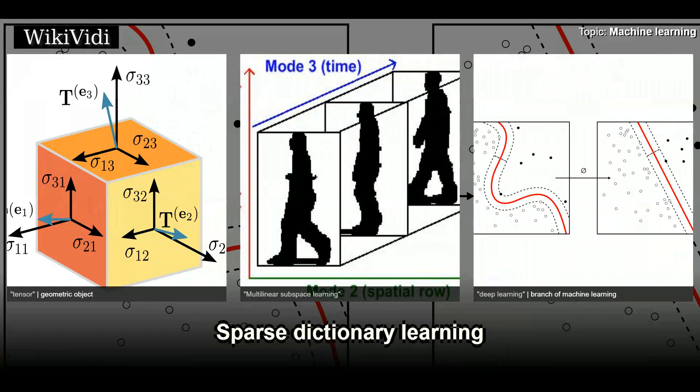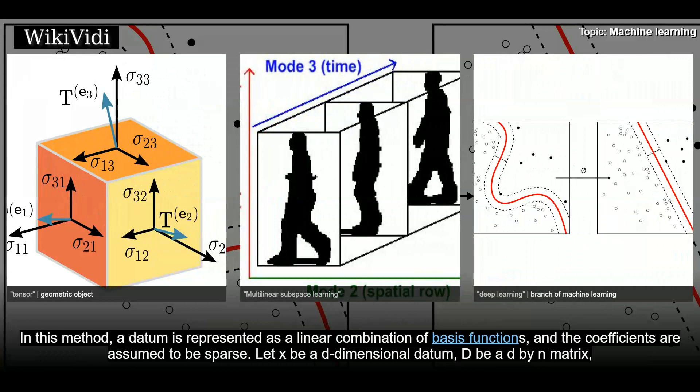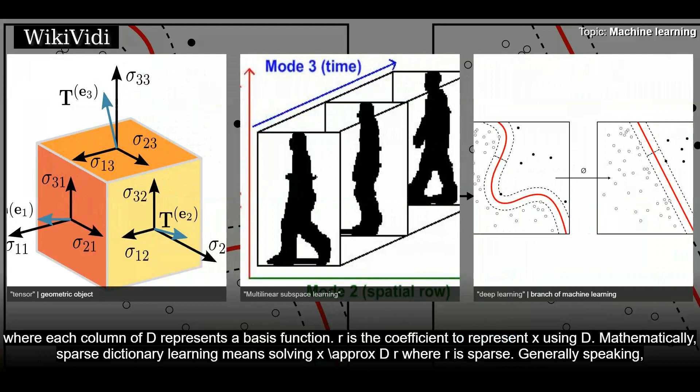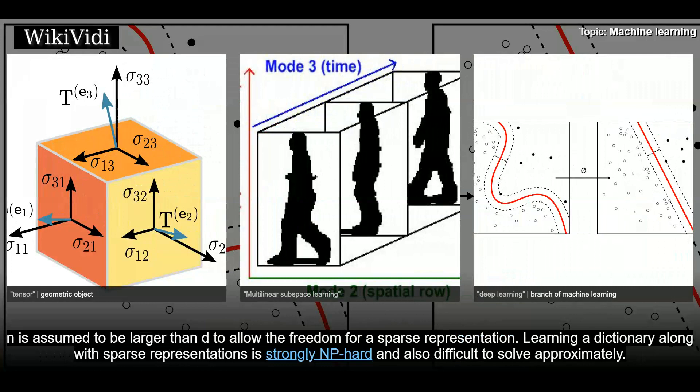Sparse dictionary learning. In this method, a datum is represented as a linear combination of basis functions, and the coefficients are assumed to be sparse. Let x be a d-dimensional datum, D be a d by n matrix, where each column of D represents a basis function. R is the coefficient to represent x using D. Mathematically, sparse dictionary learning means solving x approximately equals DR where r is sparse. Generally speaking, n is assumed to be larger than d to allow the freedom for a sparse representation. Learning a dictionary along with sparse representations is strongly NP-hard and also difficult to solve approximately.